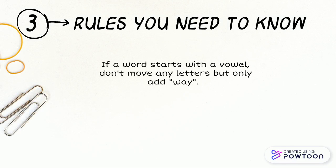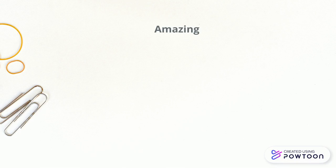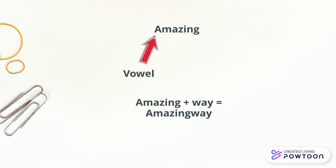If a word starts with a vowel, don't move any letters, but only add a WAY to the back of the word. For example, amazing. Amazing starts with a vowel, so we're going to add a WAY. And we have our final product.